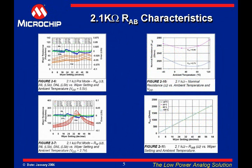Now we will look at some characterization graphs. The two graphs on the left show the change of wiper resistance with respect to the operational voltage of the device and the wiper position. Choose any wiper settings — endpoints typically work best — and compare the 5.5V wiper resistance to the 2.7V wiper resistance. The resistance scale is on the left side of the graph. At low voltage, the wiper resistance becomes more dependent on the wiper position in the circuit.